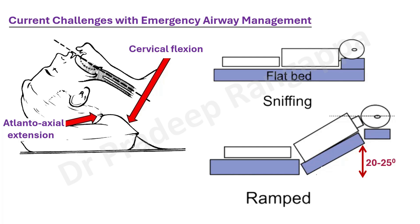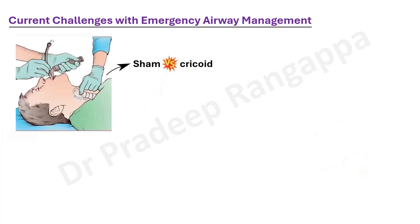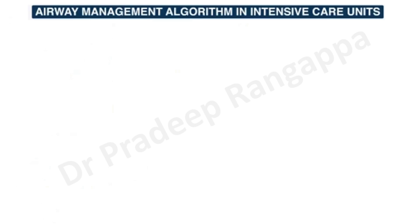Regarding cricoid pressure, two or three studies, including one from Australia, have shown no difference between cricoid pressure and sham. However, the Difficult Airway Society 2018 guidelines recommend adopting cricoid pressure whilst intubating in ICU and during rapid sequence induction.